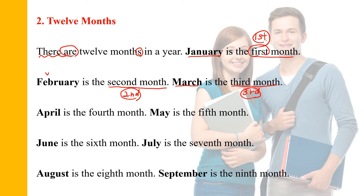April is the fourth month — number four with -th, so fourth. May is the fifth month. Look at the spelling: F-I-F-T-H, not F-I-V-E-T-H. Fifth month. June is the sixth month — sixth.